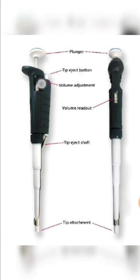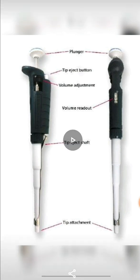The volume adjustment knob is used to set the required amount of volume — meaning what volume we want to transfer. The volume readout is displayed here. For this 1000 microliter pipette, only three digits are shown. The last digit is not displayed, so if it shows '100' it represents 1000 microliters, and if it shows '090' that represents 900 microliters.